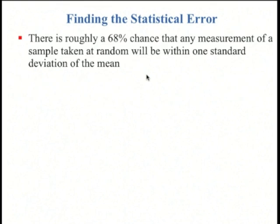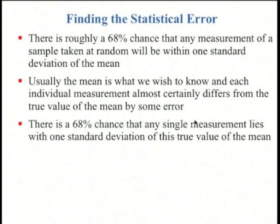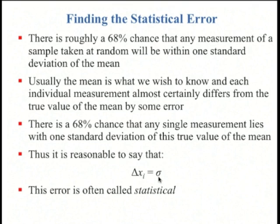There is roughly a 68% chance that any measurement of a sample taken at random will be within one standard deviation of the mean. Usually the mean is what we wish to know, and each individual measurement almost certainly differs from the true value of the mean by some error. There's a 68% chance that any single measurement lies within one standard deviation of this true value of the mean. So it's reasonable to say that delta x_i, or the error in a particular measurement x_i, is equal to sigma. This error is often called statistical.